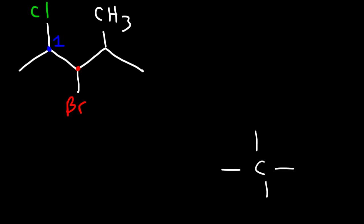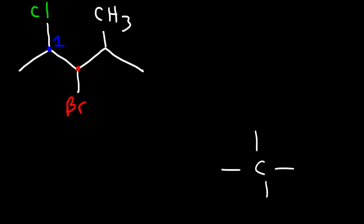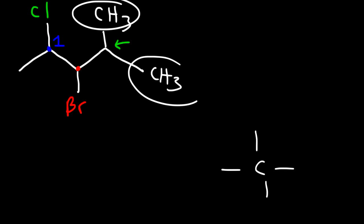We have another chiral center here because this group is one group, the bromine makes the second group, this is the third group, and the fourth group is the invisible hydrogen. Now what about this carbon — is that a chiral center? Well, that carbon doesn't have four groups because it's attached to two methyl groups. So this is not a chiral center. We have a total of two chiral centers.